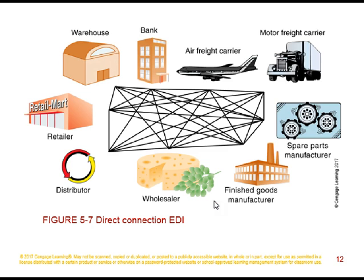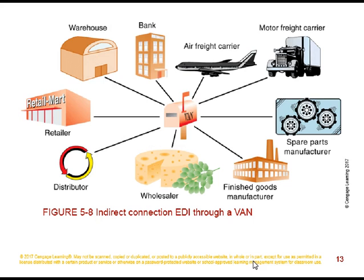In direct connection EDI, each organization has a leased line to all other organizations it trades with — this is expensive internally and creates a massive amount of data communication lines between organizations. In indirect connection EDI through a value-added network, each organization only needs a leased line to the VAN, which acts as a clearing house to route transactions to the correct vendor.